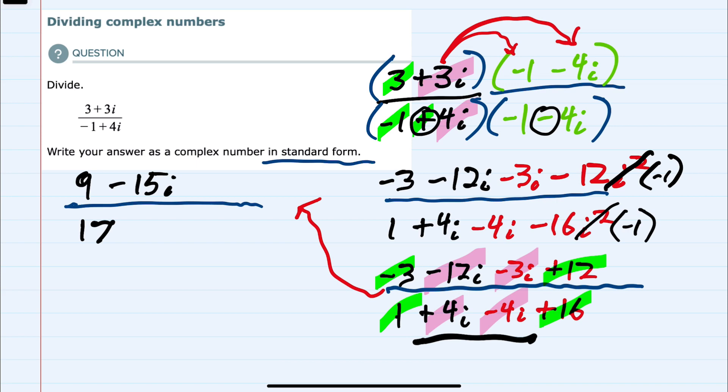So just to write this in standard form, I can separate this as 9/17 minus 15/17 i. This is now written in standard form.